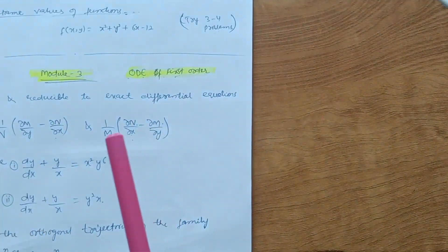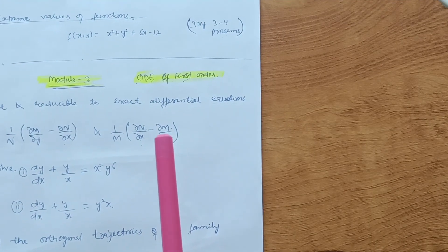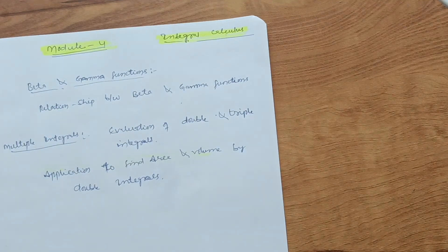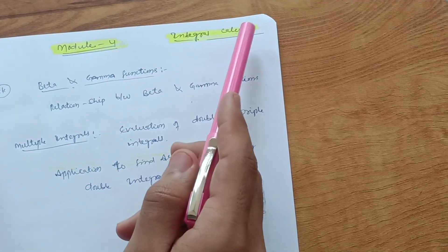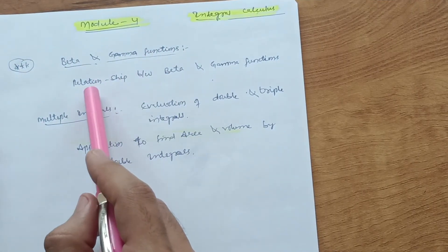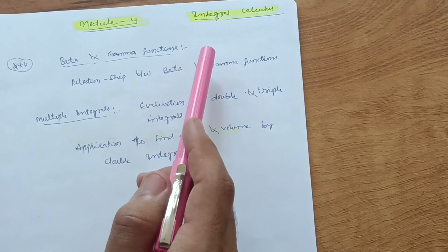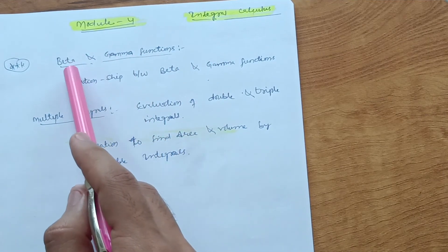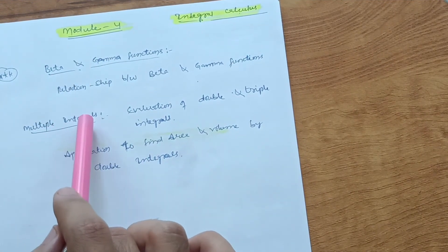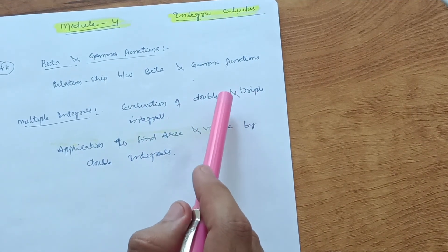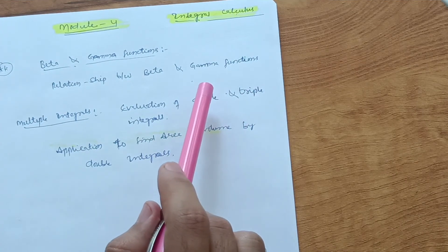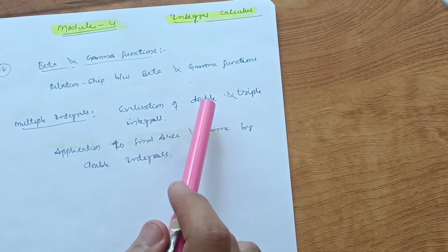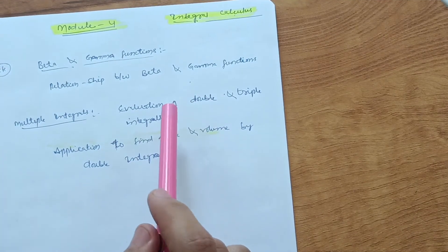Module 4 is Integral Calculus, which is a little tough for backlog students. At least from this module, go through the Beta and Gamma functions — one question will be definite: the relationship between beta and gamma functions, which is always asked in the VTU exam. If you are comfortable with multiple integrals, I prefer you go through evaluation of only double integrals, not triple integrals. In the worst case, at least write the given data for triple integration to get one mark — don't forget to write the given data.